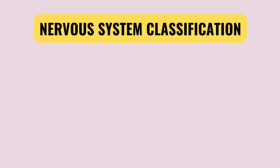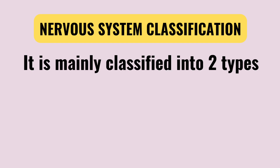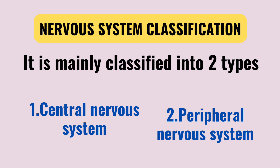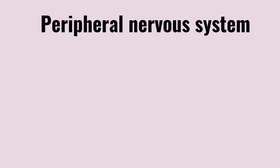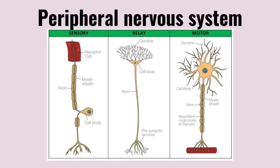We will talk about the nervous system classification. The nervous system has two types: first, CNS; second, PNS. CNS is the central nervous system, which includes the brain and spinal cord. PNS is the peripheral nervous system, which has different types of nerves — sensory, motor, and integrated nerves. Integrated nerves are mixed nerves. The main classification is CNS and PNS.